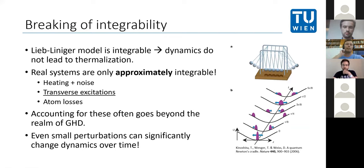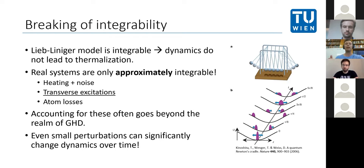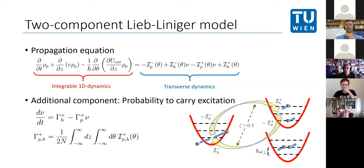Real systems are only approximately integrable — there are plenty of sources of integrability breaking: heating and noise (e.g., a jittering optical trap beam), atom losses as discussed in the previous talk, and via a Boltzmann-type collision integral. The standard GHD propagation equation accounts for the 1D integrable dynamics on the left-hand side, while the right-hand side captures the transverse dynamics through different collision integrals, each corresponding to excitation and de-excitation processes.